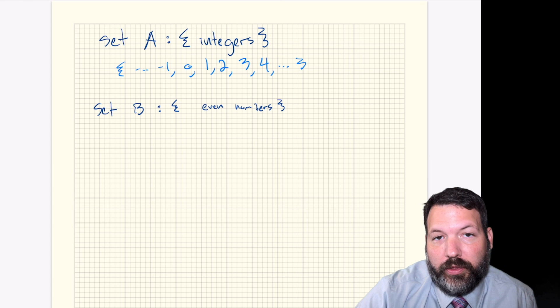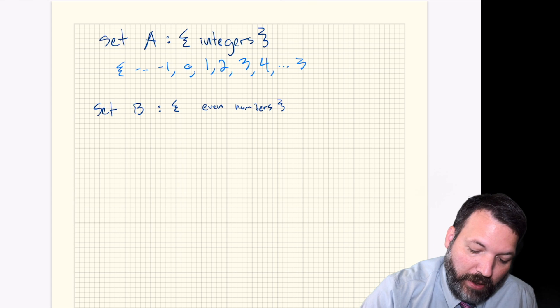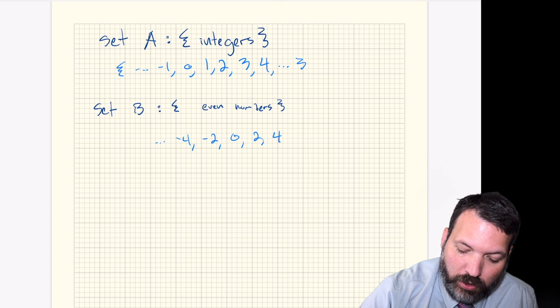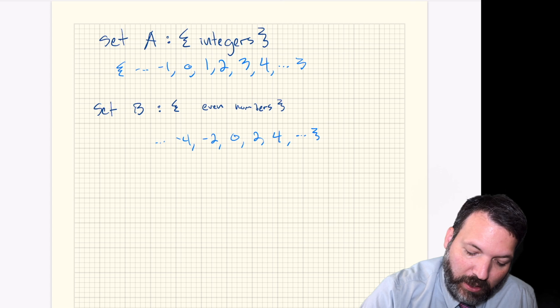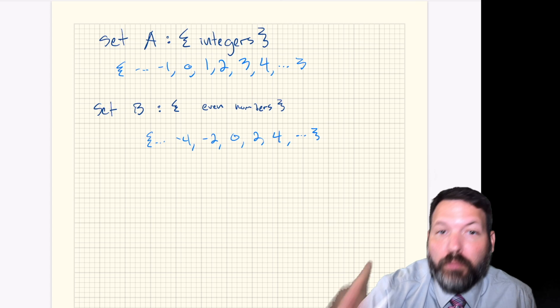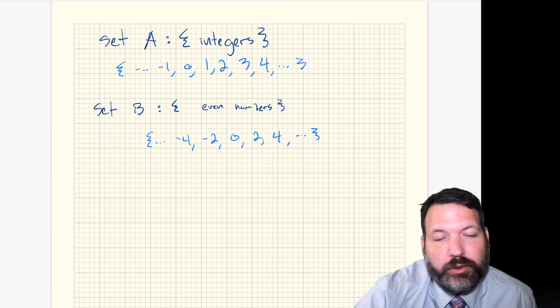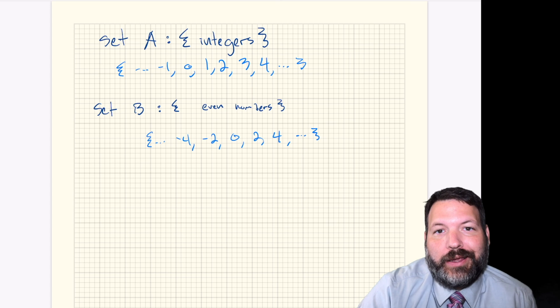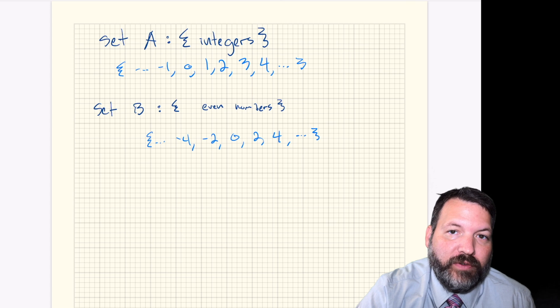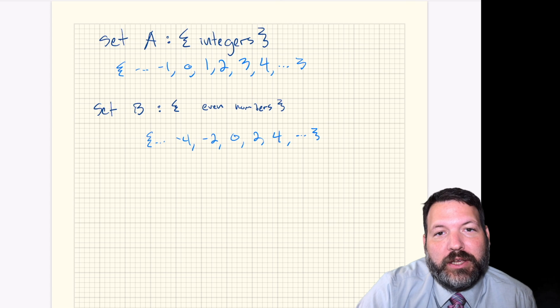And then set B, I want to compare that to all the even numbers. The even numbers, you'll remember, are those that are divisible by two. And so that would be things like negative four, negative two, zero, two, four, etc. I want you to take a second and think to yourself, which of these two sets has more numbers in it?